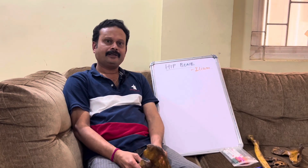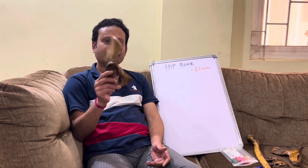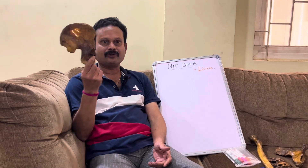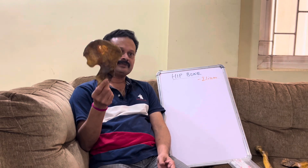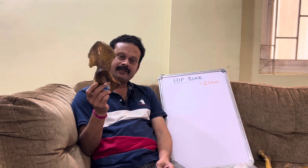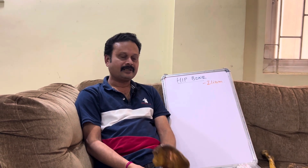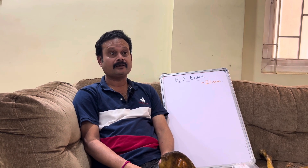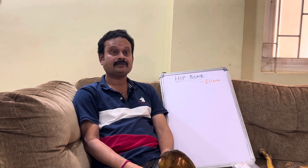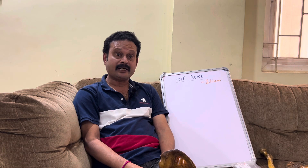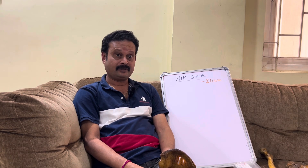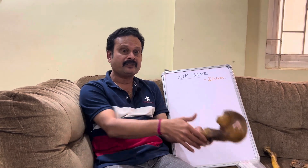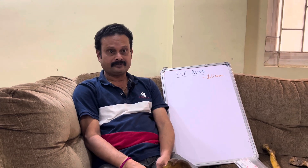Let us now know about this bone. This bone we call it hip bone, but in reality it is a nameless bone. Hence we can call it as os innominatum, and since it is present in the region of hip, it is called hip bone.